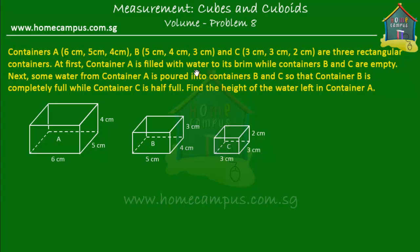At first, container A is filled with water to its brim — filled to the top — while containers B and C are empty. Next, some water from container A is poured into containers B and C, so that container B is completely full while container C is half full.